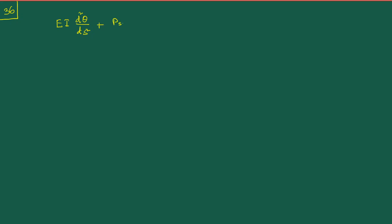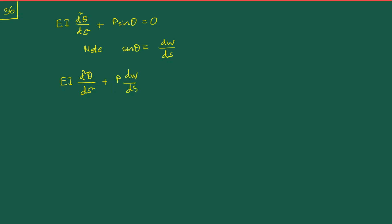We go back to the very first equation we were dealing with: EI d²θ/ds² + P sin θ = 0. Our motivation now is to find the deflection. Note that sin θ = dw/ds, as established earlier. Substituting back into this equation gives: EI d²θ/ds² + P (dw/ds) = 0.